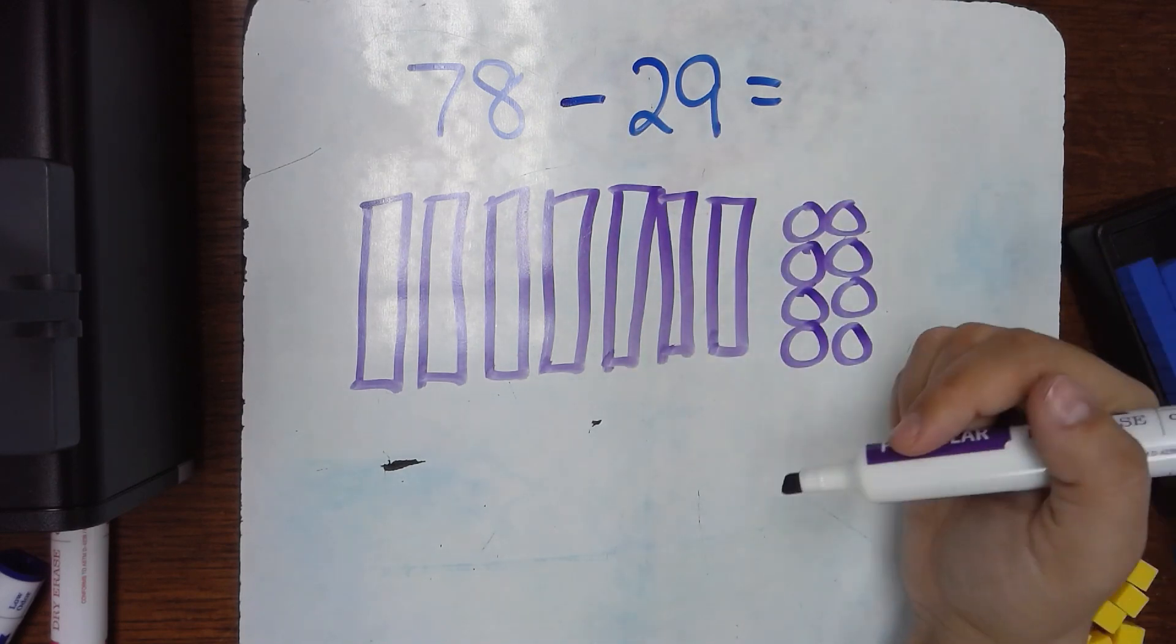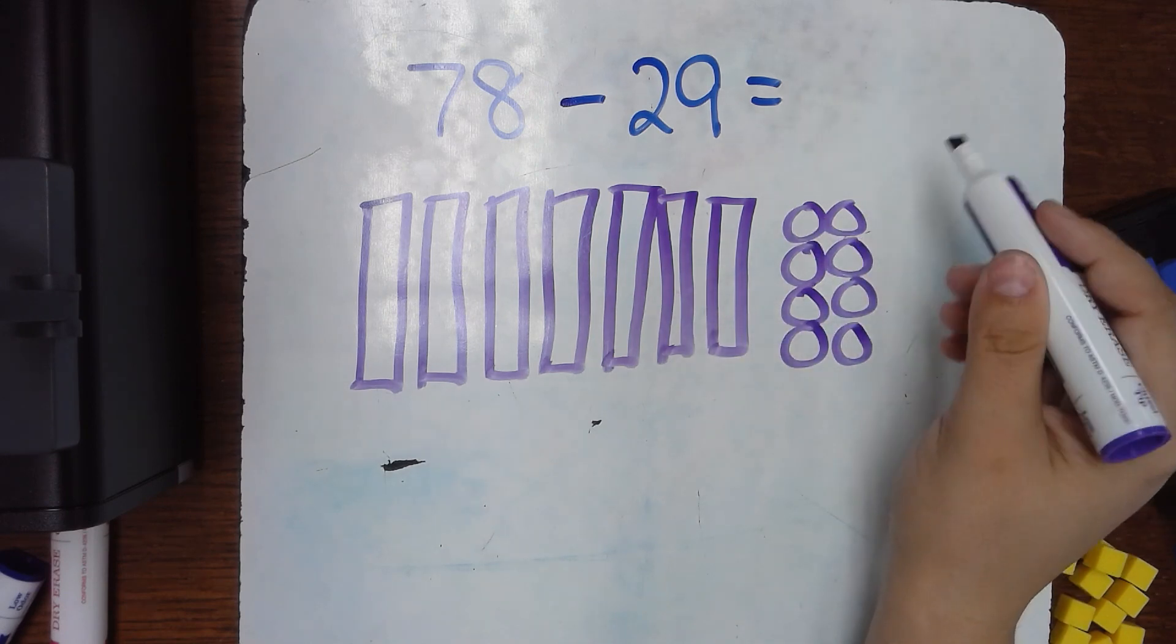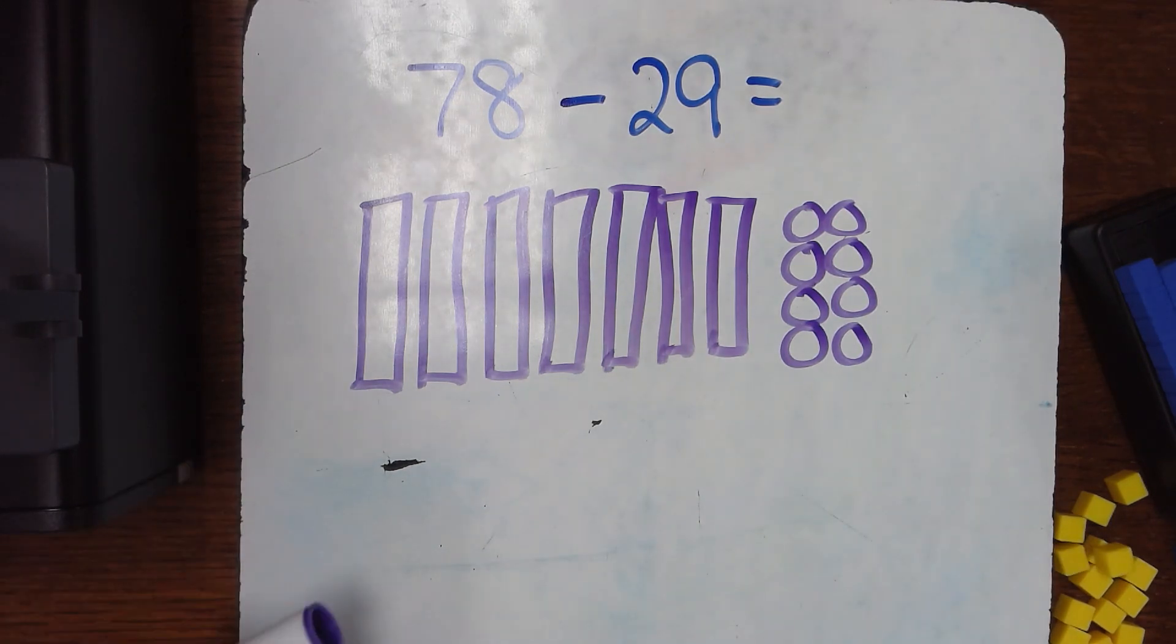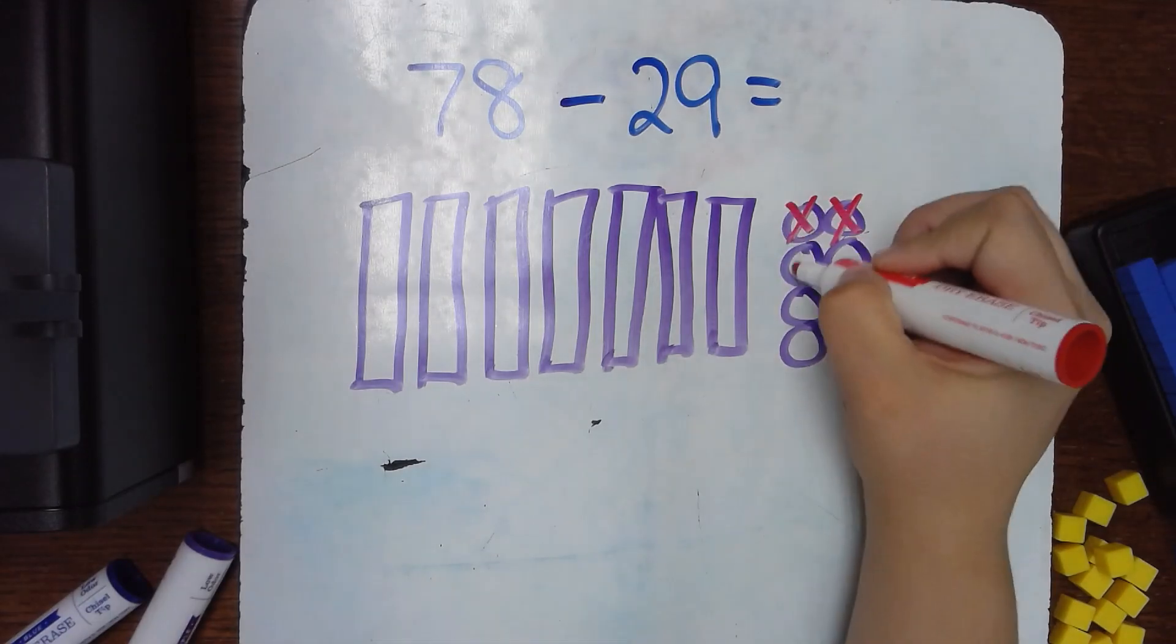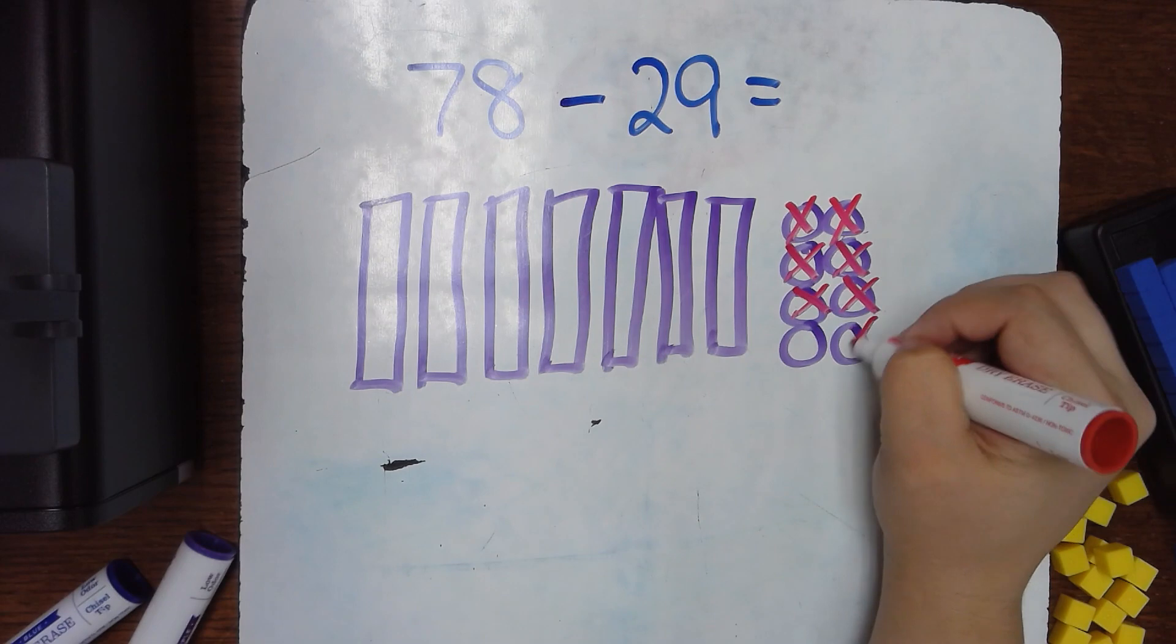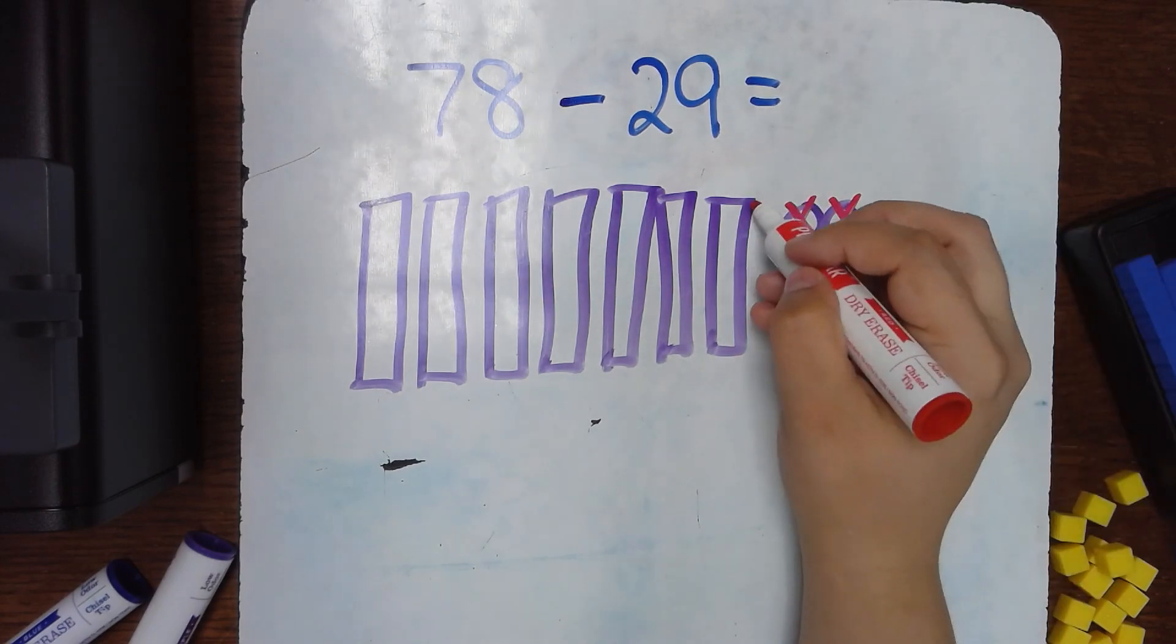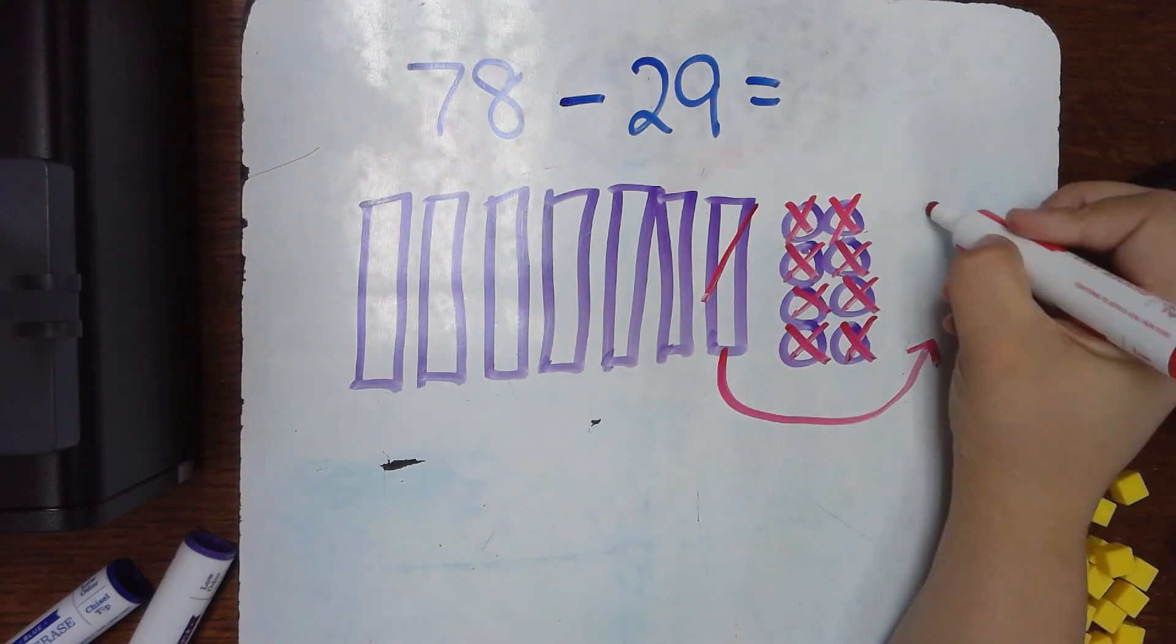So what I teach my class when we're subtracting we put x's. When we're regrouping we slash. So I'm going to use another color so you can see. So I'm going to subtract 9. 1, 2, 3, 4, 5, 6, 7, 8. Oh, I still need one more. So I'm going to slash this and turn it into ten ones.